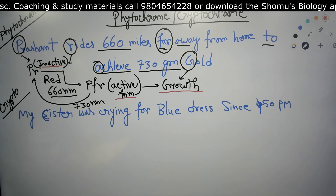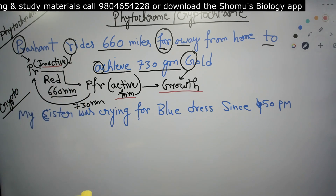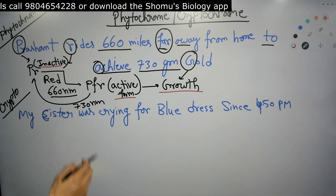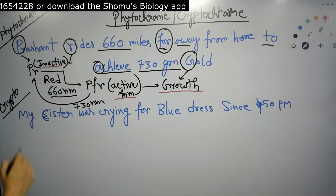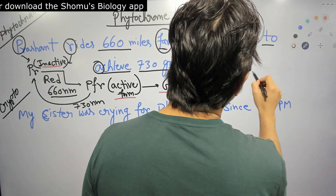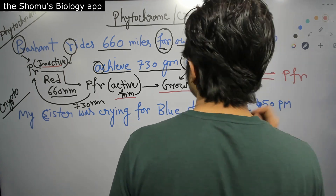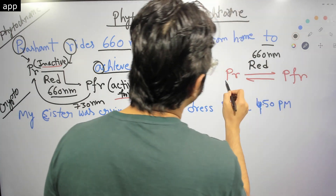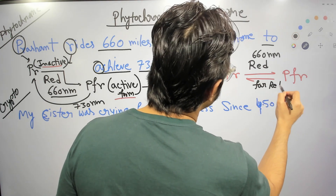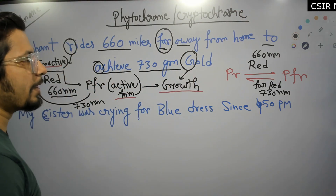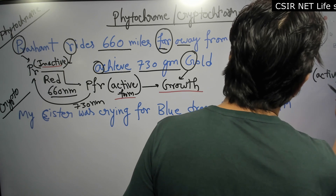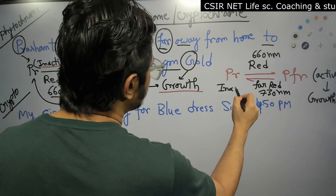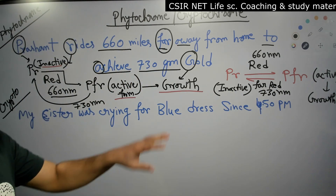So to redraw the Pr and Pfr interconversions: Pr gets converted to Pfr when there is red light at 660 nanometers. And Pfr gets converted to Pr when there is far-red light at 730 nanometers of wavelength. Pfr is the active form and is related to the growth of the plant or growth of the cell. That's all you need to know about Pr and Pfr — that's all you need to know regarding the phytochromes.